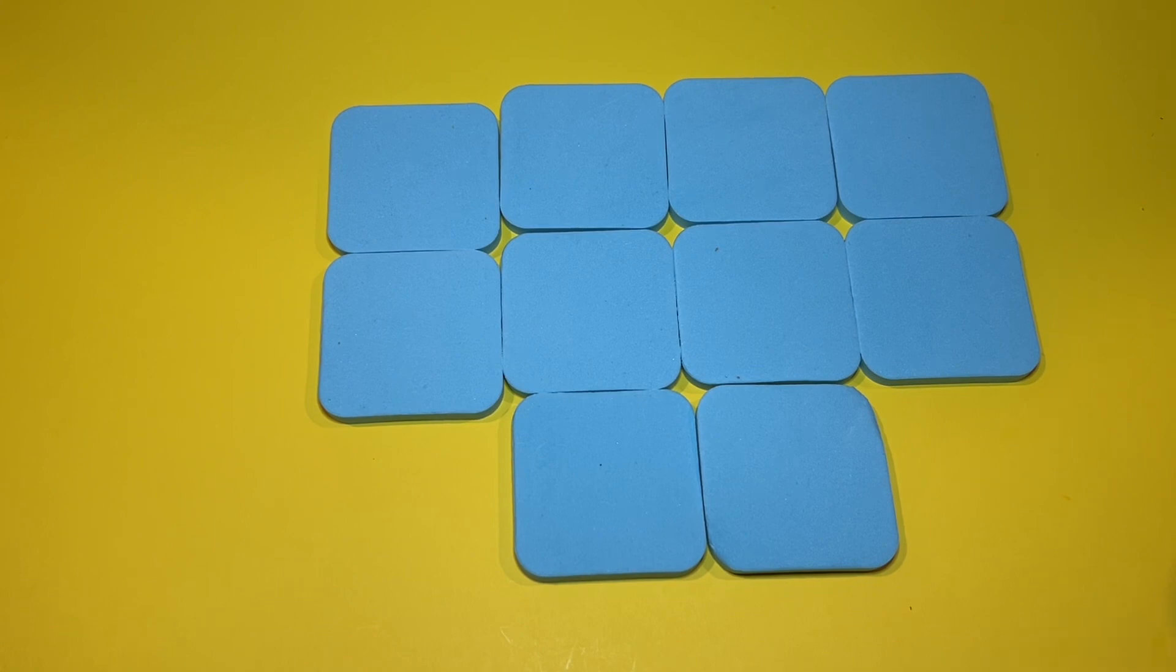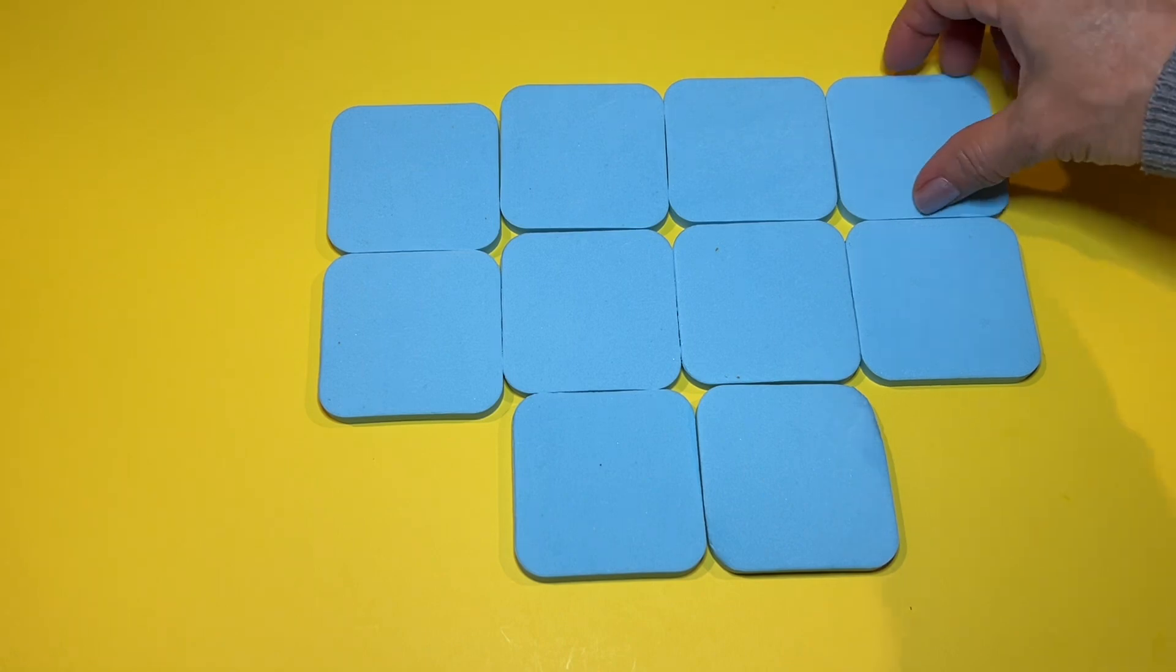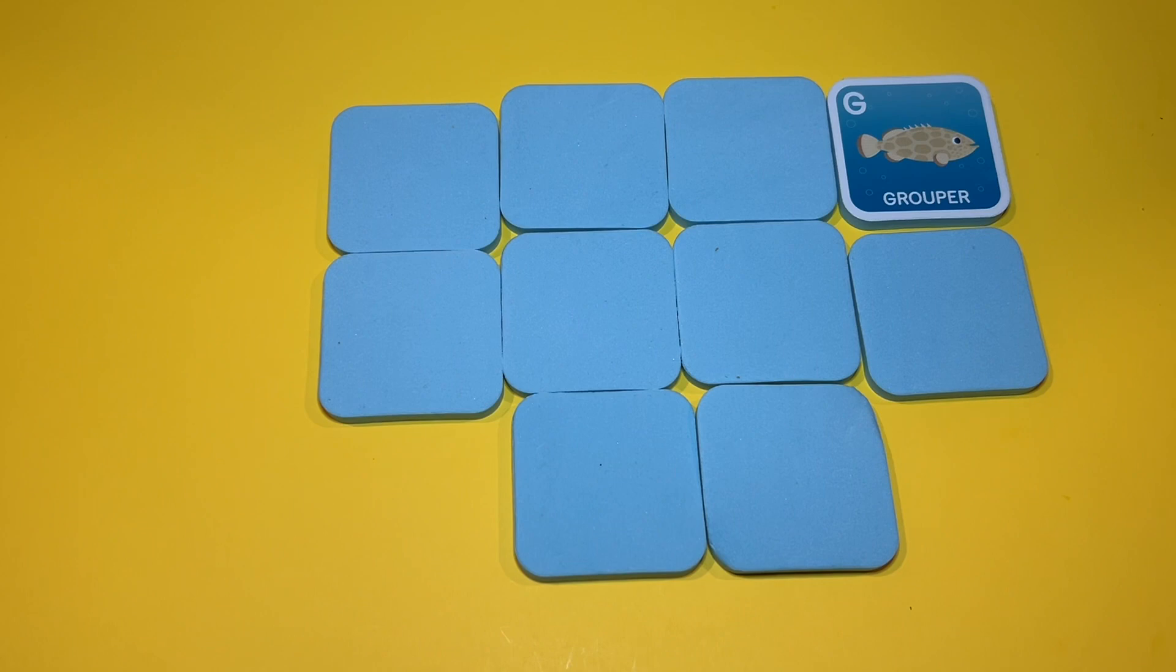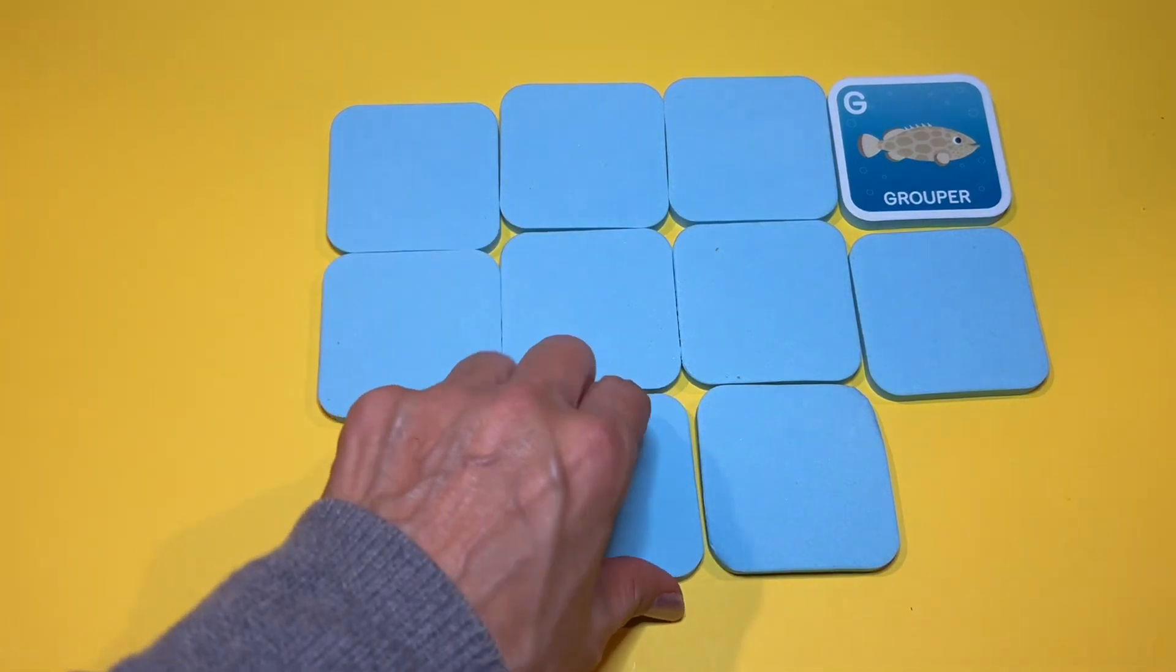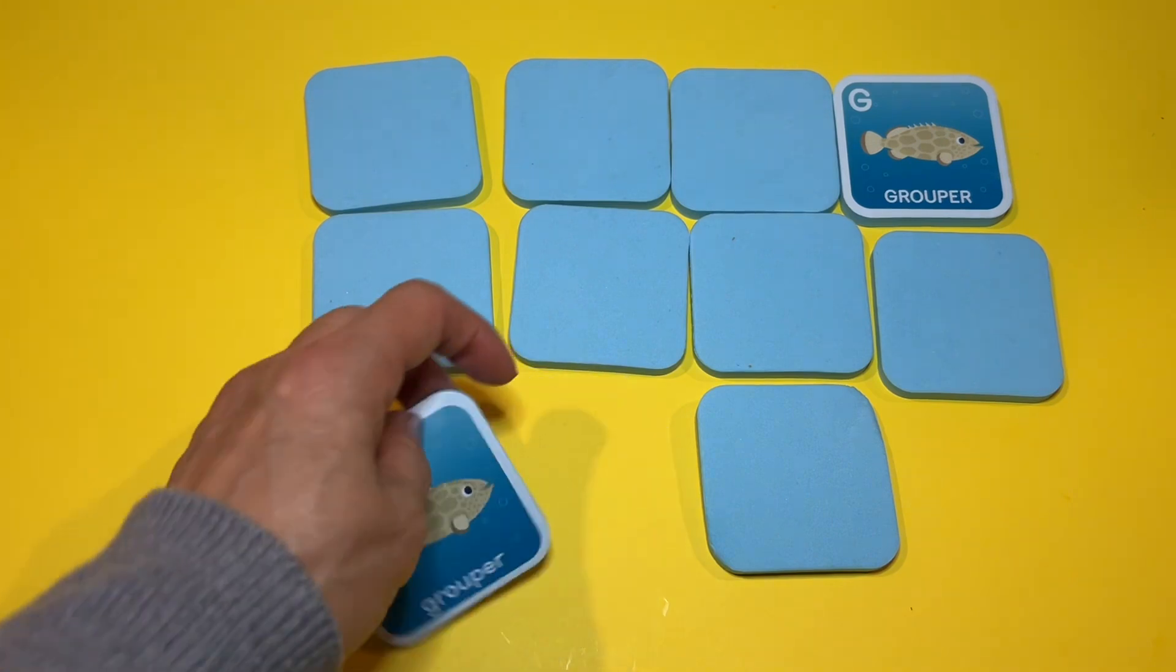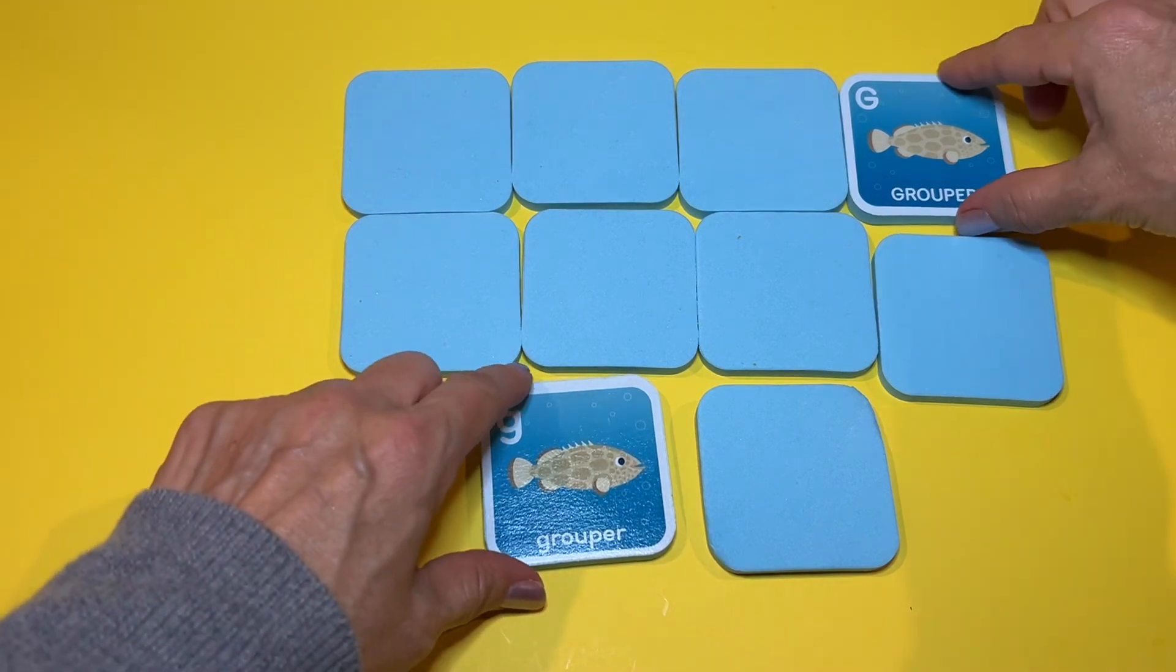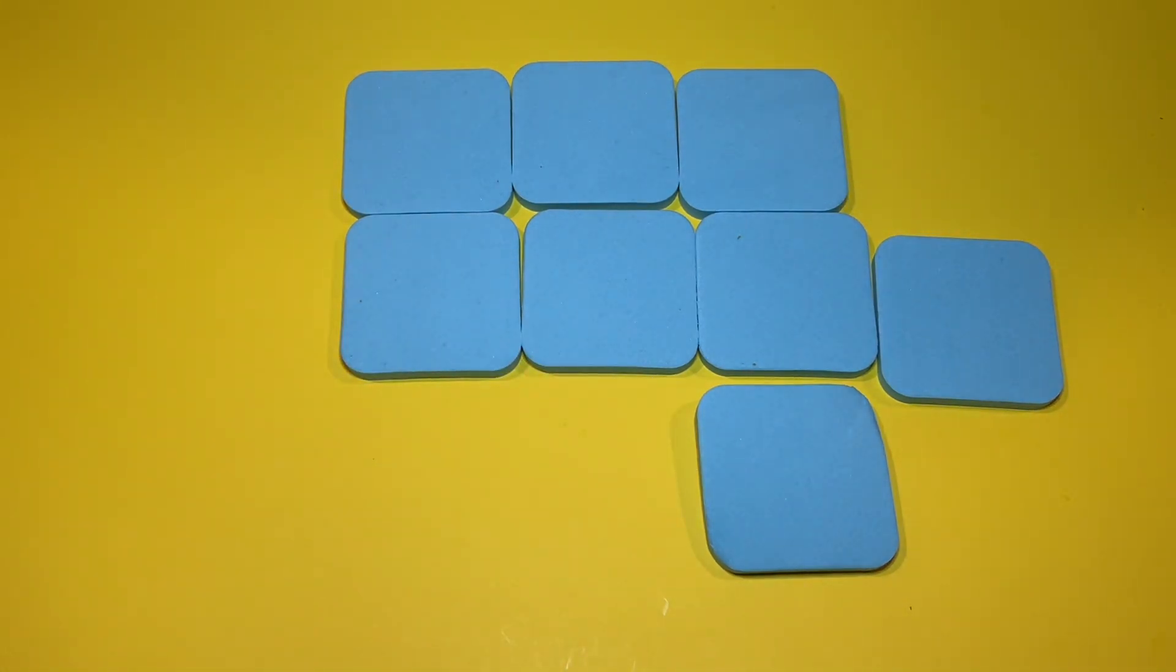What should we get first? The one in the corner? It's a grouper fish. Okay. Could it be this one? Oh, wow. What a lucky guess. Capital G, small g. Yes, we made a match. Good job, you guys.